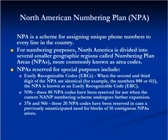North America is divided into several geographical regions called numbering plan areas, or NPAs, most commonly known as area codes. The format of an NPA code is NAB, where N is any digit 2 through 9, A is any digit 0 through 9, and B is also any digit 0 through 9.